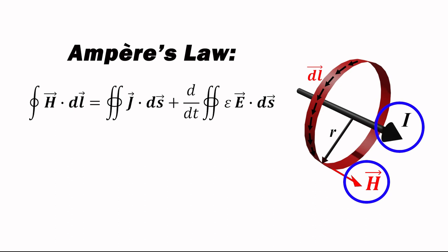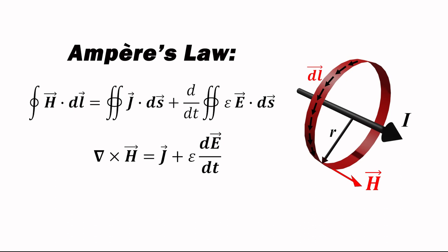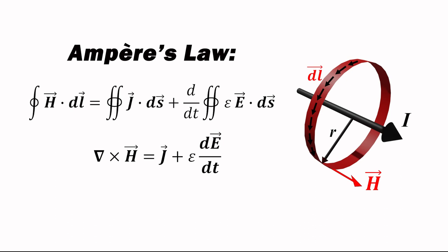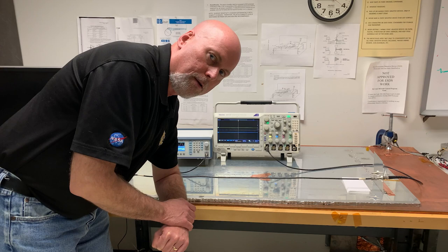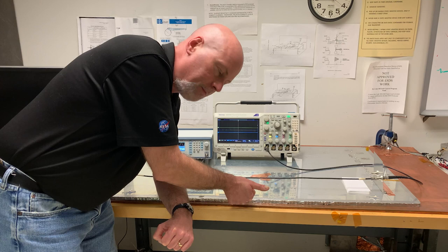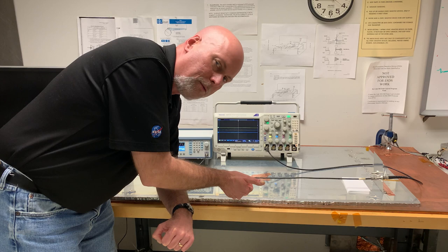Ampere's law is also sometimes shown in its differential form, stating that the curl of the magnetic field intensity equals the current density J plus the permittivity times the time derivative of the electric field. I prefer to use the integral form because it provides a more intuitive description, but you'll need to be able to recognize both forms when you come across them. Magnetic fields and magnetic flux lines follow what we call the right-hand rule. If you point your thumb in the direction of current flow along your wire or cable, then the magnetic fields and flux lines will wrap around the wire in the direction of the fingers of your right hand.